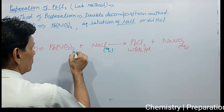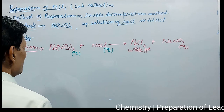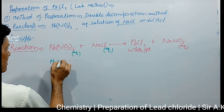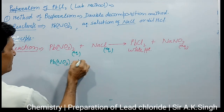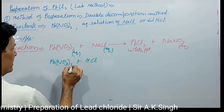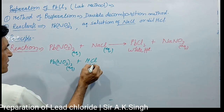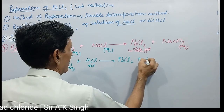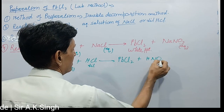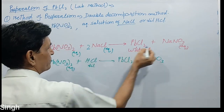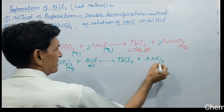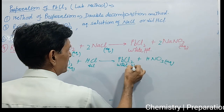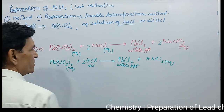The reactants are also in aqueous form. If we are using dilute hydrochloric acid, then it is used in aqueous form — this is dilute. There is formation of a white precipitate of PbCl₂ and an aqueous solution of nitric acid. The precipitate is white and the acid is dilute aqueous.